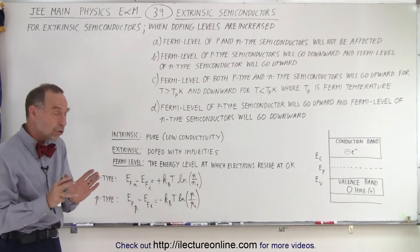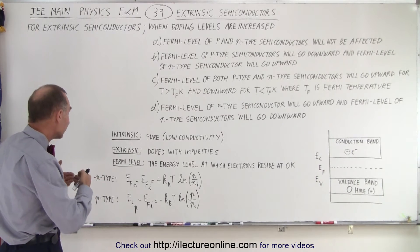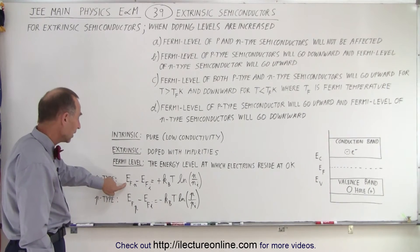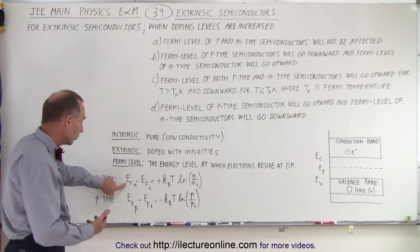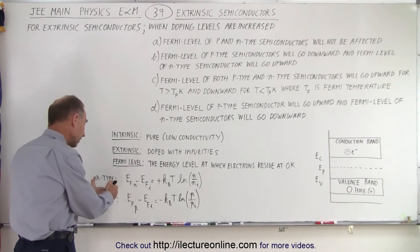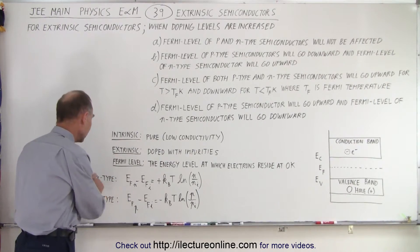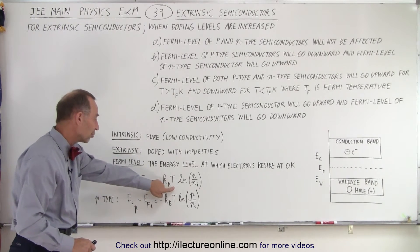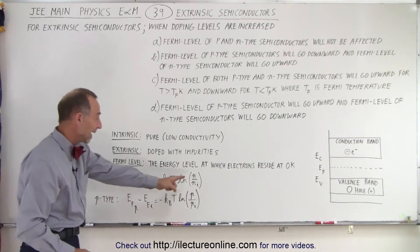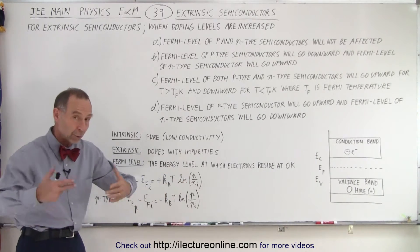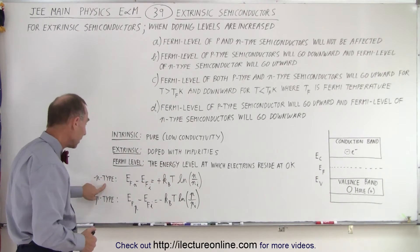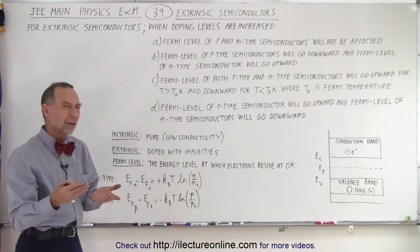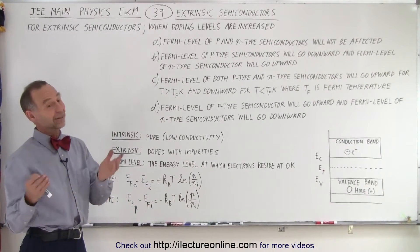So now the equation to be used to calculate how the Fermi level changes for n-type and p-type semiconductors is here. The Fermi level or the energy level minus the initial energy level, so E_f minus E_0 for n-type semiconductors is equal to plus the Boltzmann's constant times the temperature times the natural log of n over n_i. So if n is bigger than n_i, in other words, if we increase the doping levels for n-type semiconductors, the difference in the energy levels is a positive quantity.